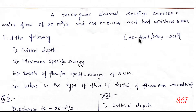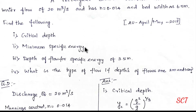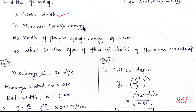A rectangular channel section carries a water flow of 20 m³ per second. So Q is equal to 20 m³ per second. Next, N is equal to 0.014 — Manning's constant. Bed width B value is 6.5 m. Critical depth is minimum specific energy: critical depth is Yc, minimum specific energy Ec or E minimum.